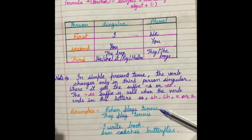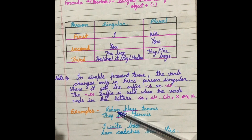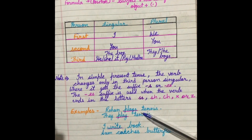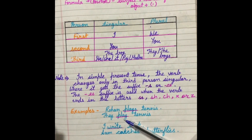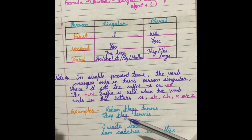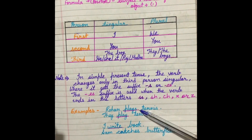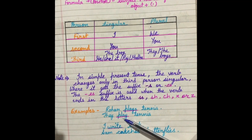Rohan plays tennis. Rohan is the name of a boy, so this is third person singular. So we add s with the verb — plays. Note: the last letter of 'play' is y, so we add only s, not es. They play tennis — here they is third person but plural, so we do not add s or es. जब singular हो और third person हो, tab hum verb ke saath s or es add karenge. Agar plural subject hai, tab s or es add nahi karenge.